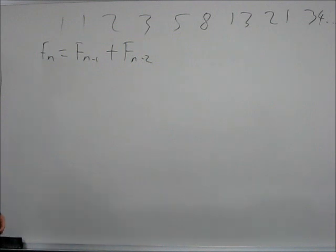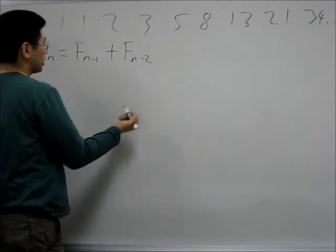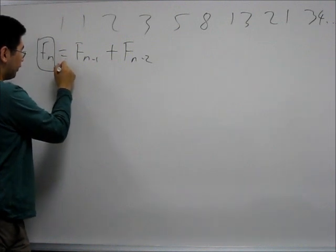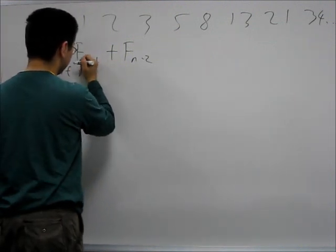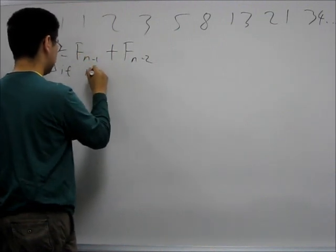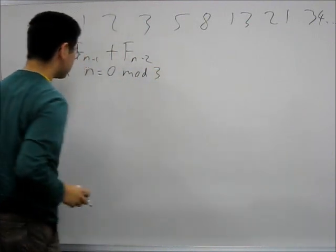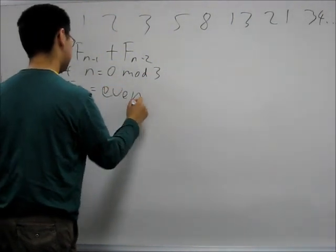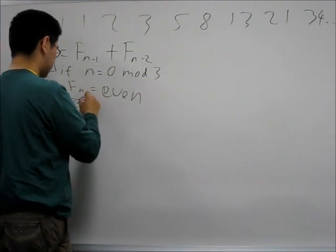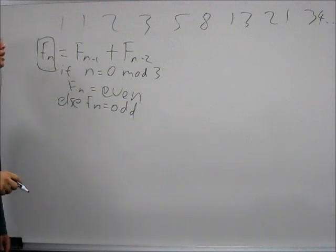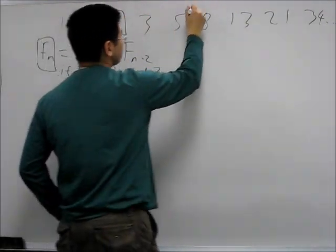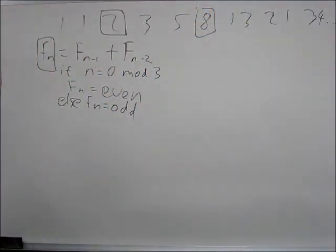What we're actually going to prove, sticking with F of n, is that if n is divisible by 3, then F of n is even. And if we just simply look at the first few terms, we can see that it's very true — the third and sixth terms are 2 and 8, and they're both even.